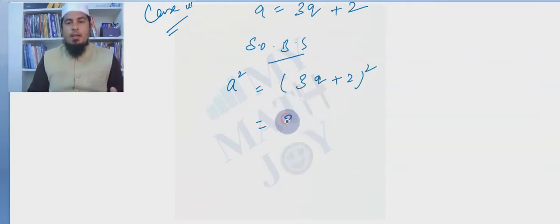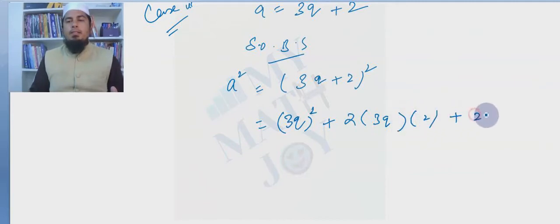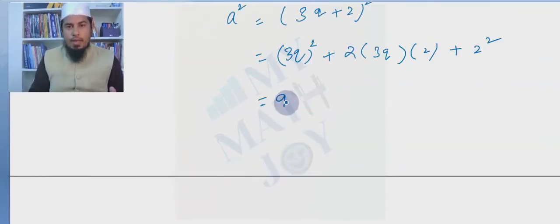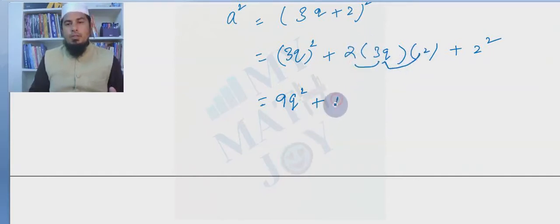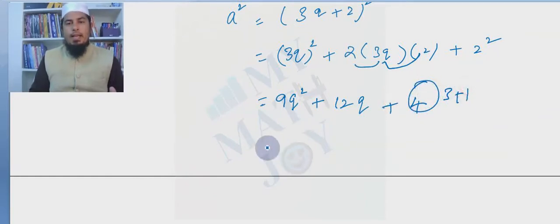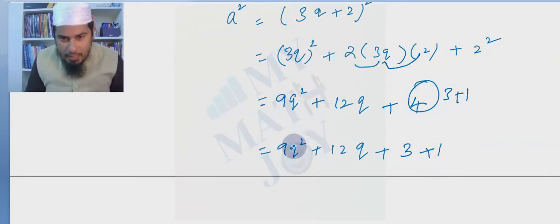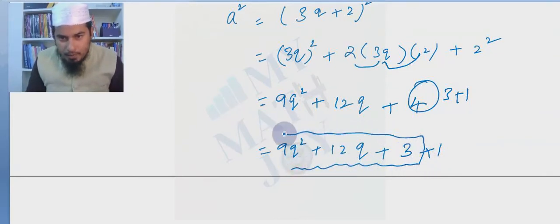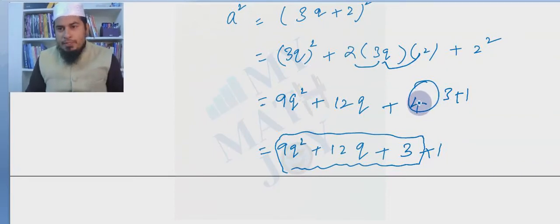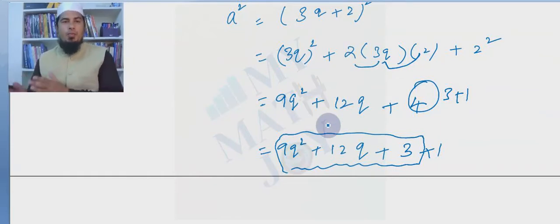Expanding: a² = 9q²+12q+4. We split 4 as 3+1: a² = 9q²+12q+3+1 = 3(3q²+4q+1)+1 = 3m+1. This is the 3m+1 form, and since r cannot be greater than or equal to b=3, this split is valid.